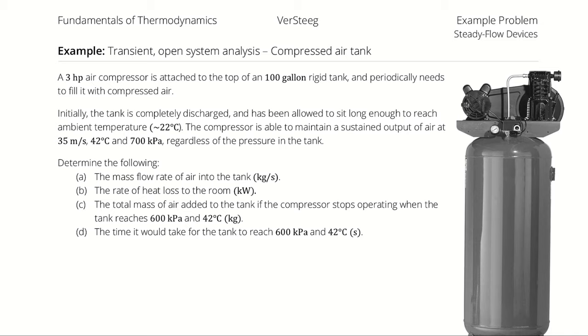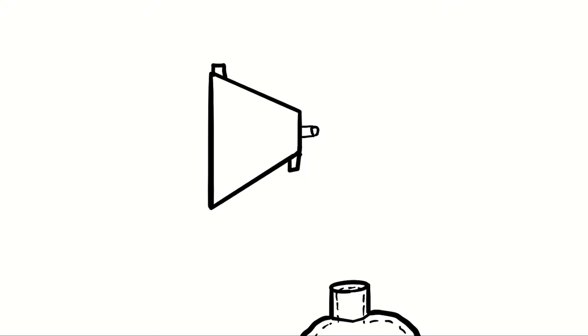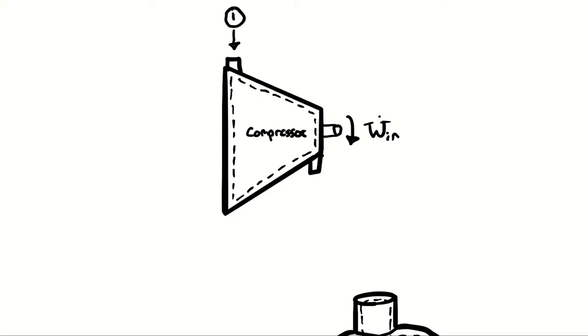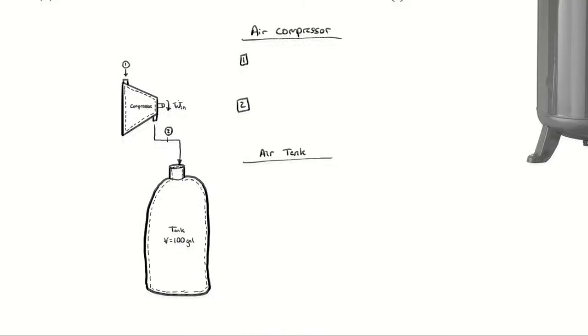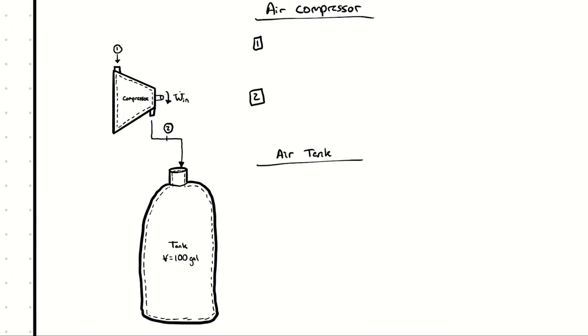I'm going to break this analysis into a steady flow device — the air compressor — and a transient analysis on the tank itself. I'll start by drawing a system diagram. I have a steady flow device processing air from ambient conditions to the outlet of the compressor, which is also the inlet to the tank. I'm defining the inlet to the compressor as state point 1, and the outlet as state point 2.